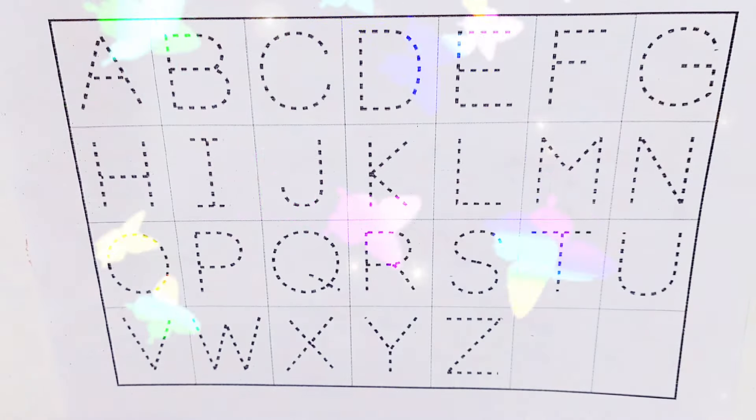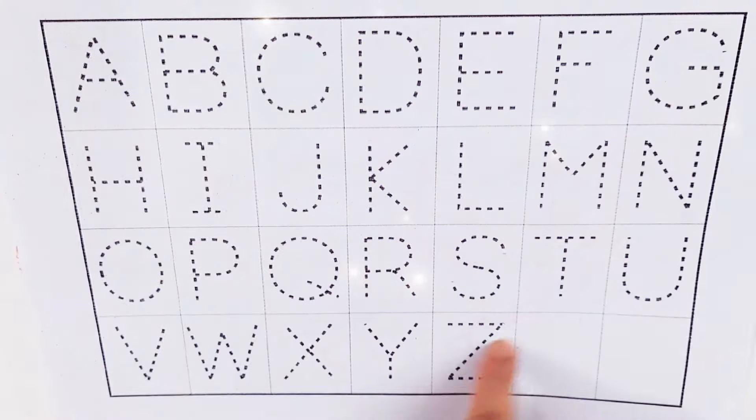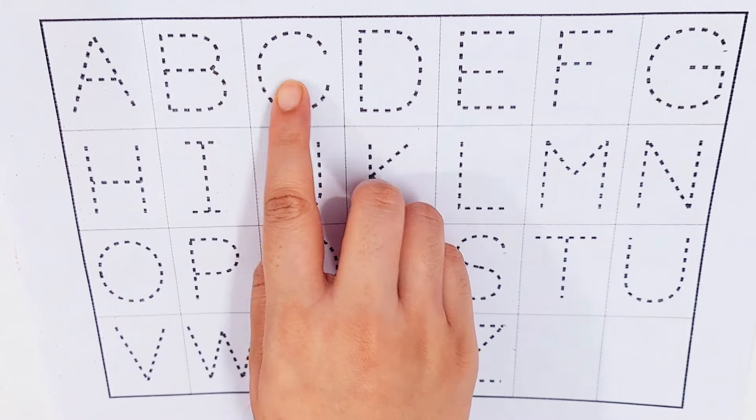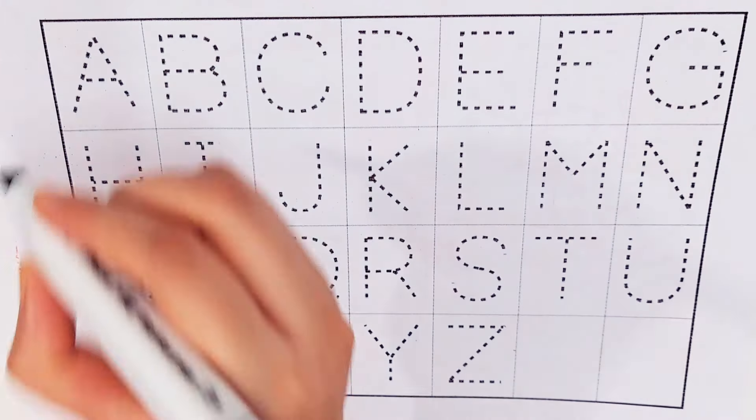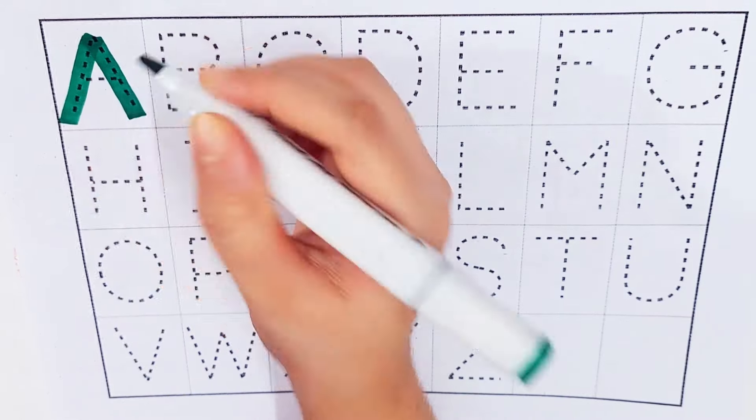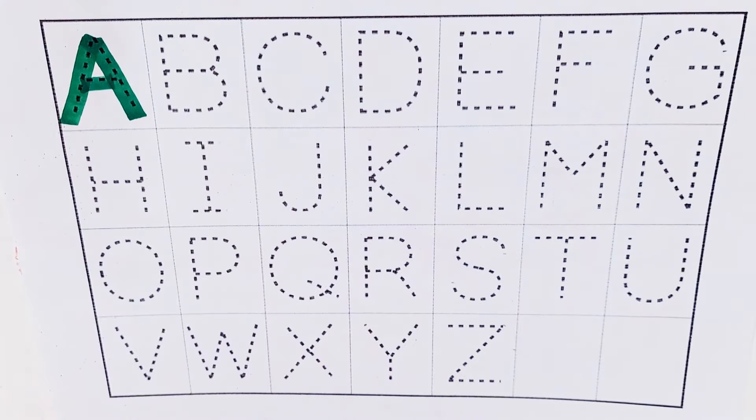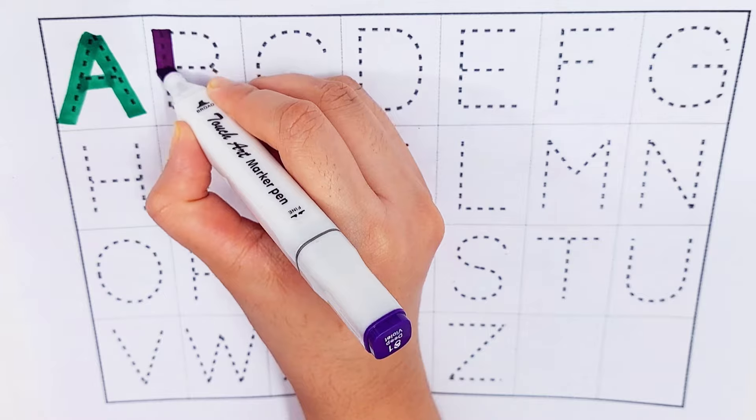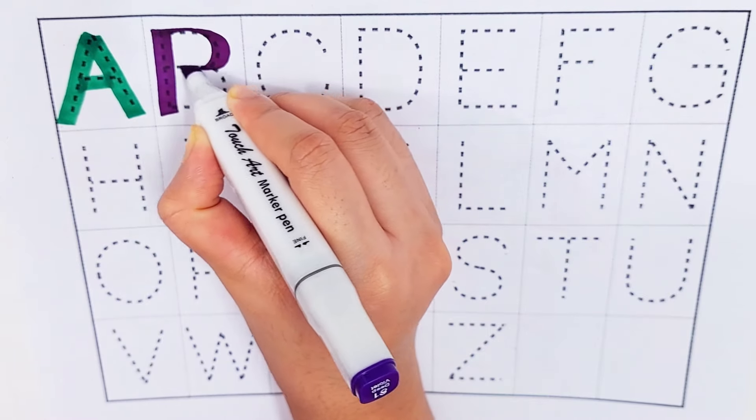Today we will learn some alphabets. A, B, C, D. A, A for arrow. B, B for box.